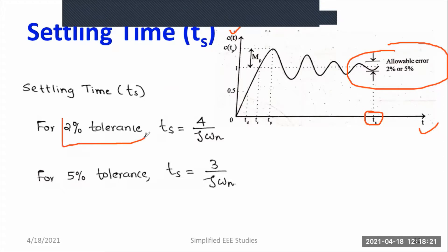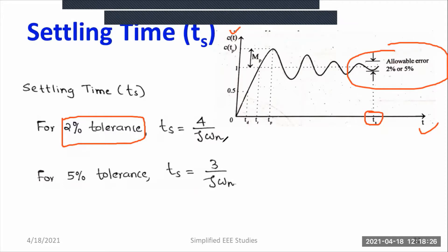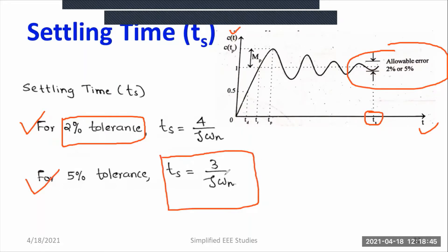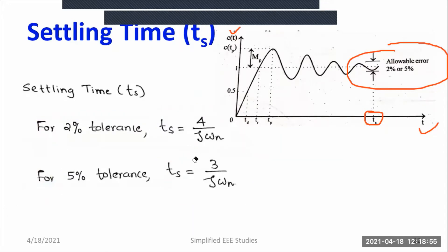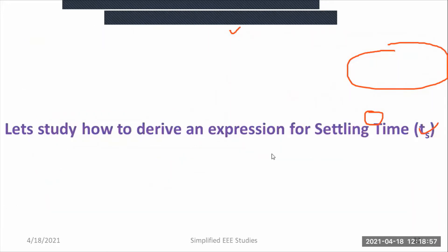For the 2% tolerance band, the final expression for settling time is equal to 4 divided by zeta omega-n, where omega-n is the natural frequency of oscillation in radians per second and zeta is the damping ratio. For the 5% tolerance band, the settling time expression is 3 divided by zeta omega-n. These are the two expressions I am going to derive.